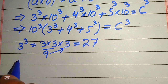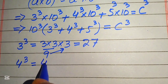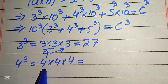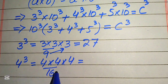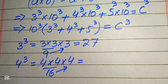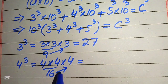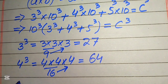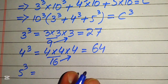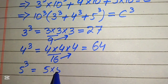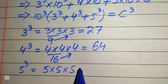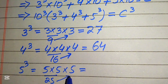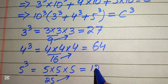Now we find the cube of 4: 4 multiplied by 4 multiplied by 4 — 4 times 4 is 16, and 16 times 4 equals 64. Similarly, 5 cubed equals 5 multiplied by 5 multiplied by 5 — 5 times 5 is 25, and 25 times 5 equals 125.